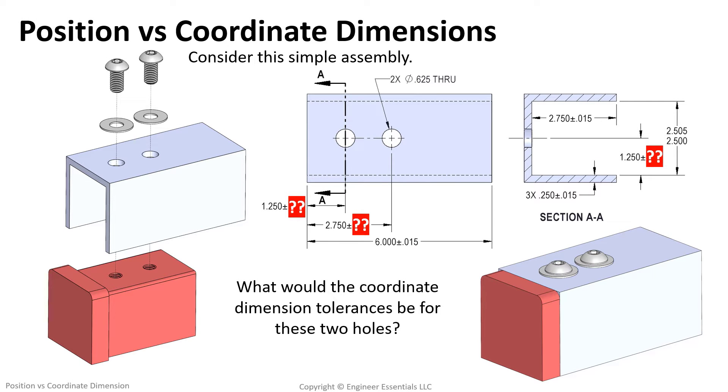Here we have an example of a part that uses rectangular coordinate dimensions with directly applied tolerances. In a simple assembly shown, we can see that the fasteners pass through the assembly channel and thread into the red block. As you can see, the holes in the aluminum channel have a clearance that allow for some deviation of the holes with respect to the threaded hole in the red block. So what tolerance values would be directly applied to these dimensions to guarantee assembly every single time?